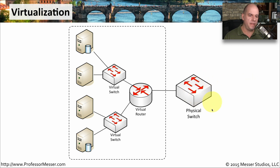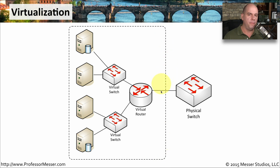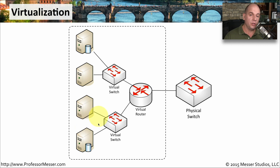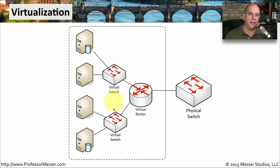We still have a physical switch on the outside of the virtual network, because it all has to connect back to the physical network. But everything inside this dotted line you can think of as being on one piece of hardware. We have all of these virtualized devices running inside of this one massive computer — there might be multiple servers, and there may also be virtual switches. These are virtualized devices, effectively switches running in software.